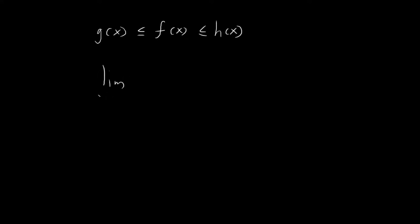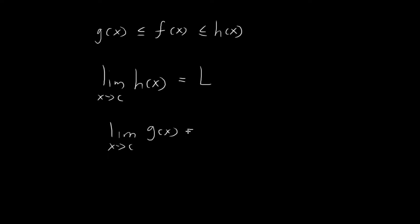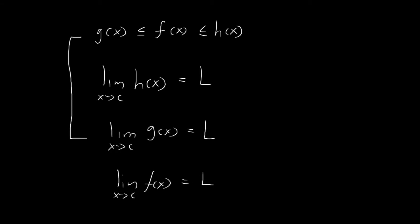We're also given that the limit as x tends towards c for h of x exists and it's equal to L. And the same goes for the function g — the limit as x tends towards c for g of x also exists and it's equal to L. What I want to prove in this video is that, given all this information, the limit as x tends towards c for f of x is also equal to L.